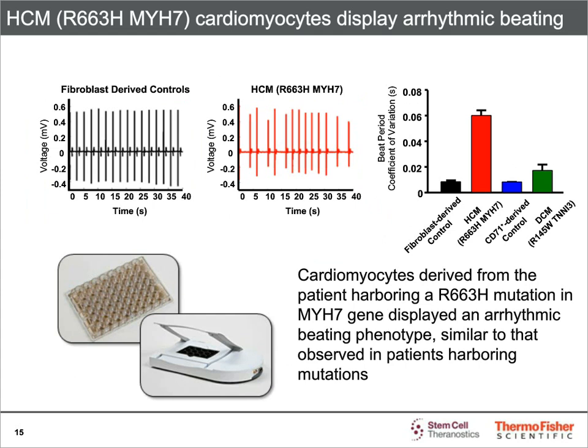Cardiomyocytes derived from HCM patients using the PSC Cardiomyocyte Differentiation Kit display arrhythmic beating, as measured using an Axion multi-electrode array instrument. The black traces show that control cardiomyocytes have a consistent beat period, whereas the red traces for HCM cardiomyocytes show significant variability in the beat period. Calculating the coefficient of variation (CV) quantitatively confirms that fibroblast-derived HCMs show significant variability versus control. DCM cardiomyocytes, another disease line derived from CD71 cells, also show a slightly more irregular beat rate relative to control, but not nearly as striking.